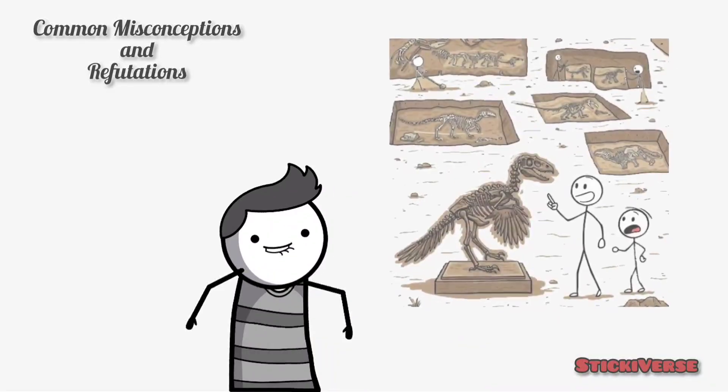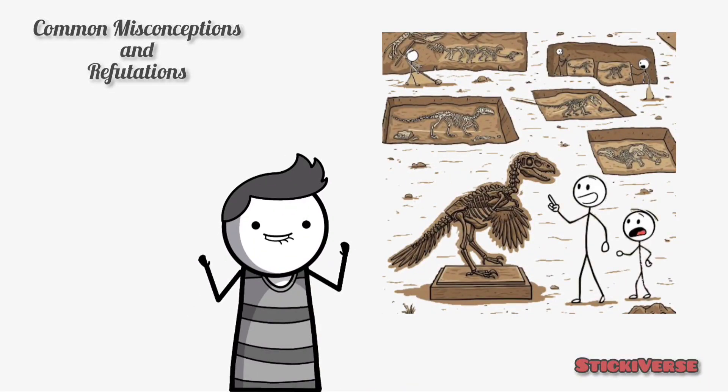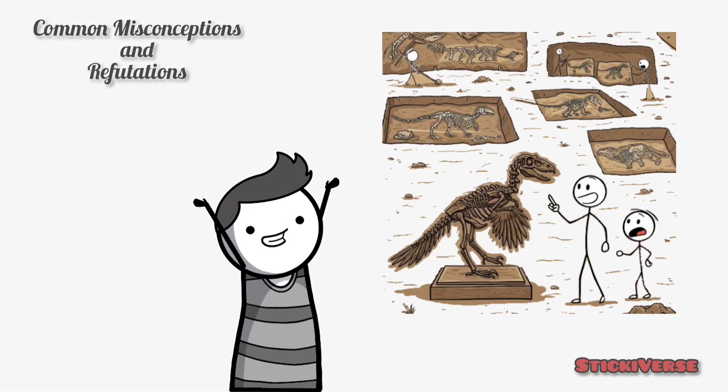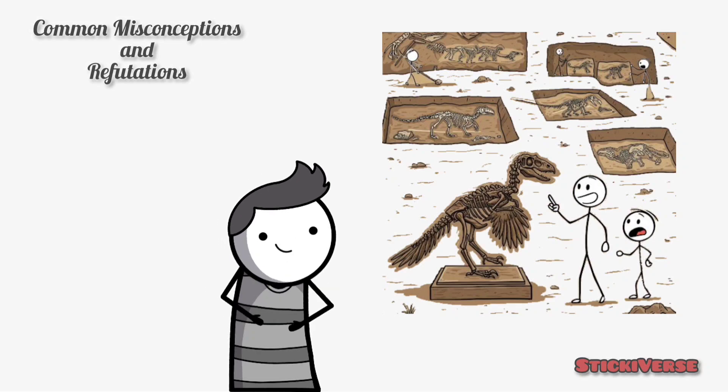Another myth is the claim that there are no transitional fossils. In fact, there are many transitional fossils that clearly show species evolving from one form to another, like the famous Archaeopteryx, which has both dinosaur and bird-like features.